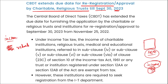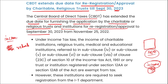The Central Board of Direct Taxes extended the due date for furnishing the application by charitable or regional trusts and institutions for re-registration and approval — from 25th of September 2022 to 30th of September 2023.